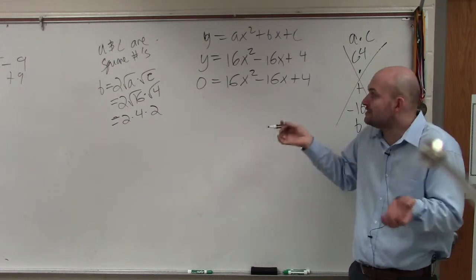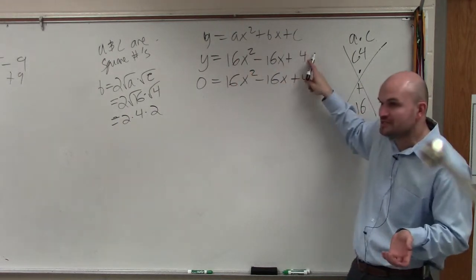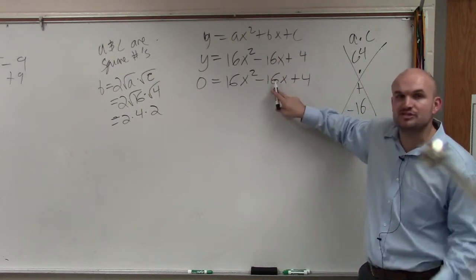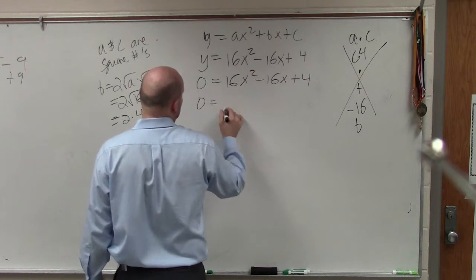So how can you factor this, then, when you have squared terms, your first and last term are squared, and your middle term is 2 times the square root of each term? Then, all you simply do...